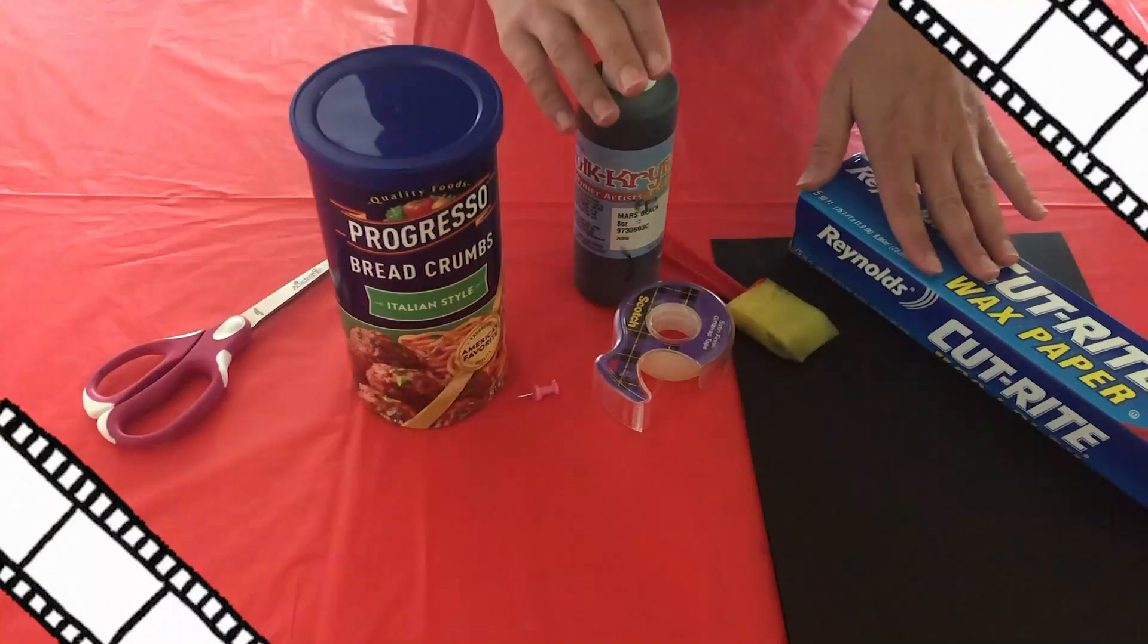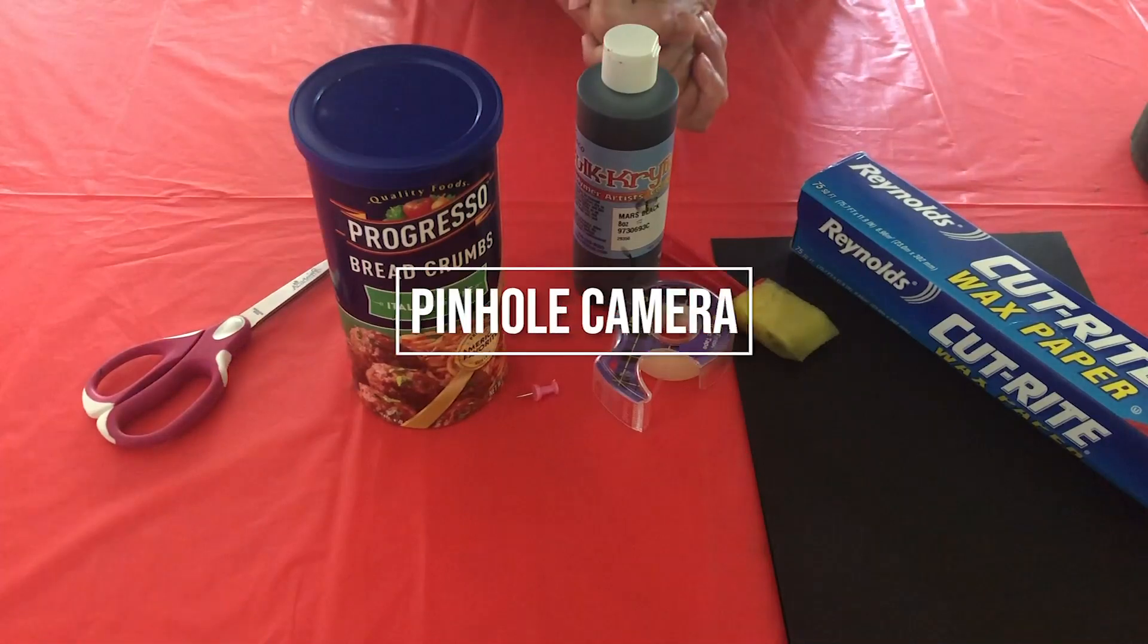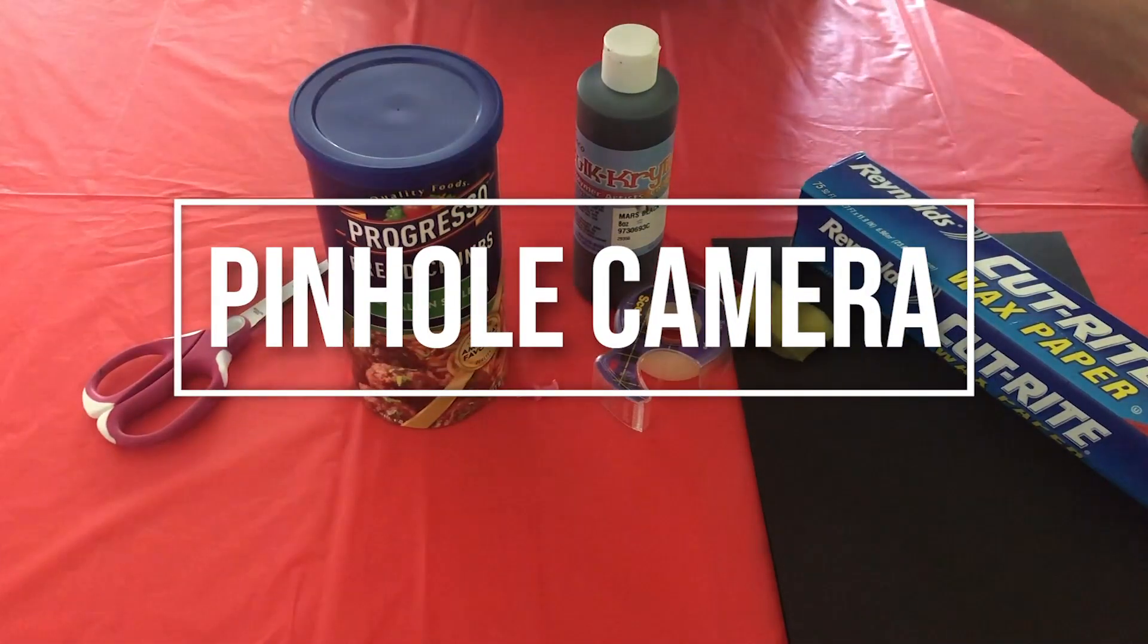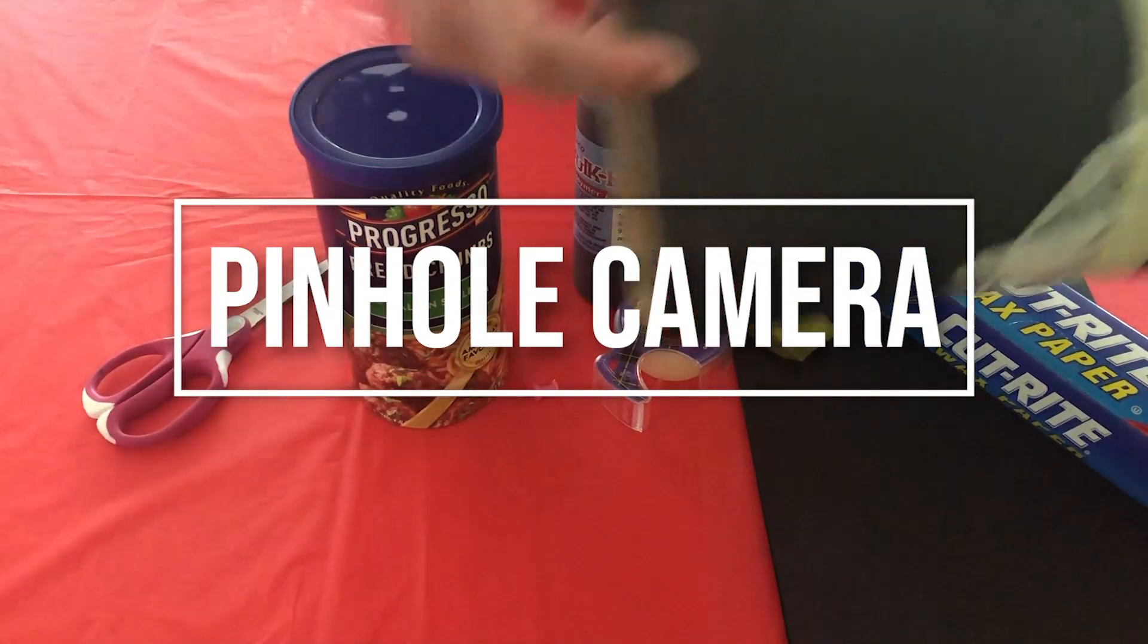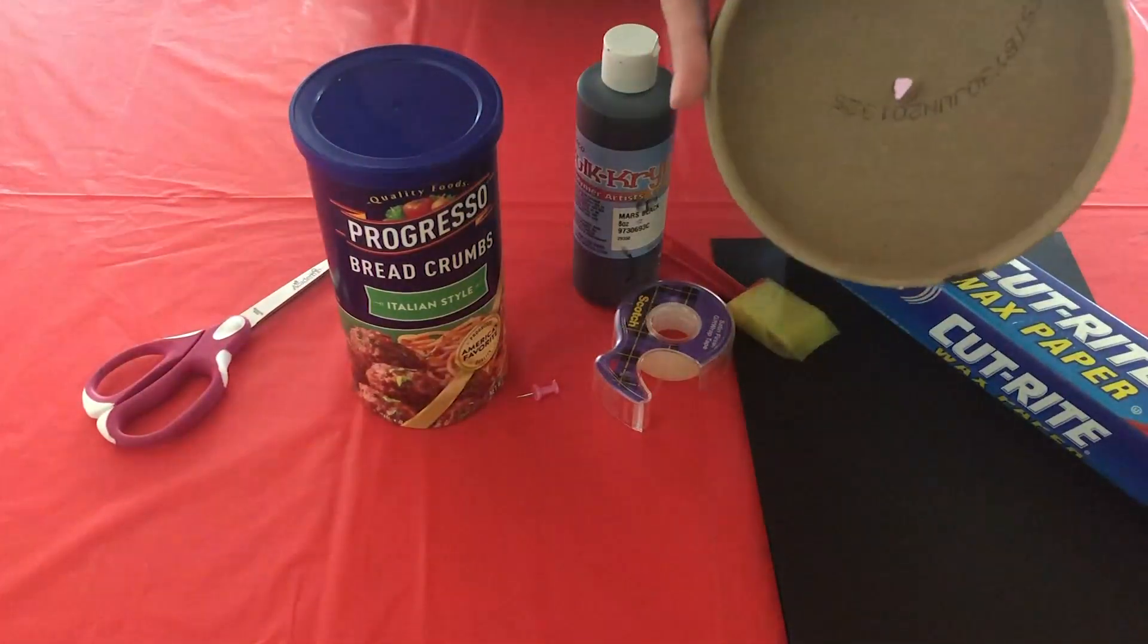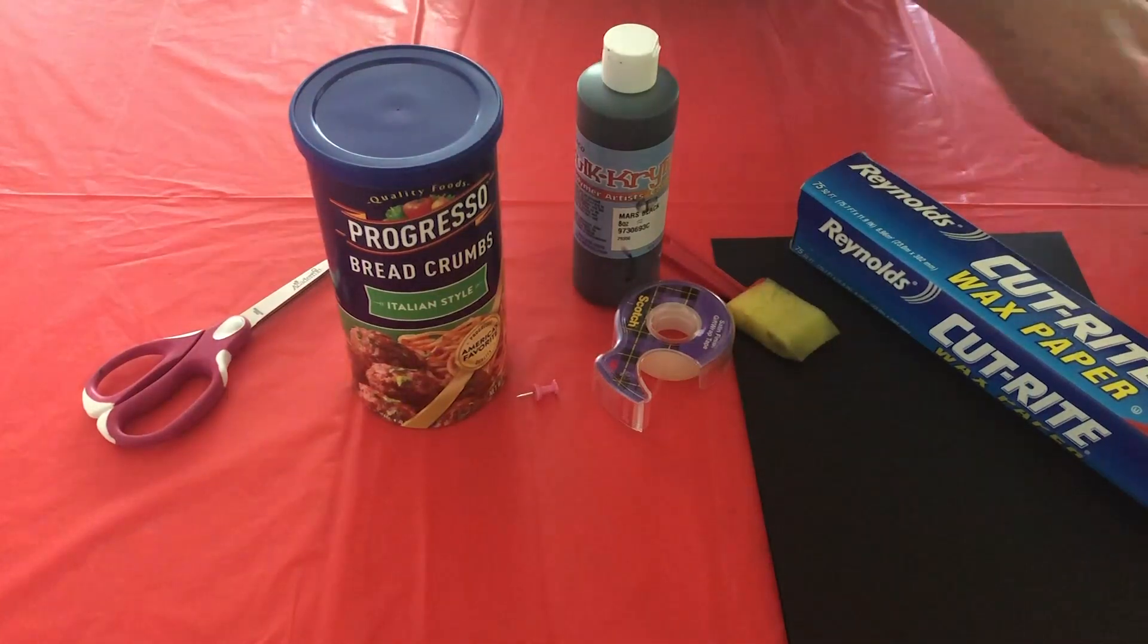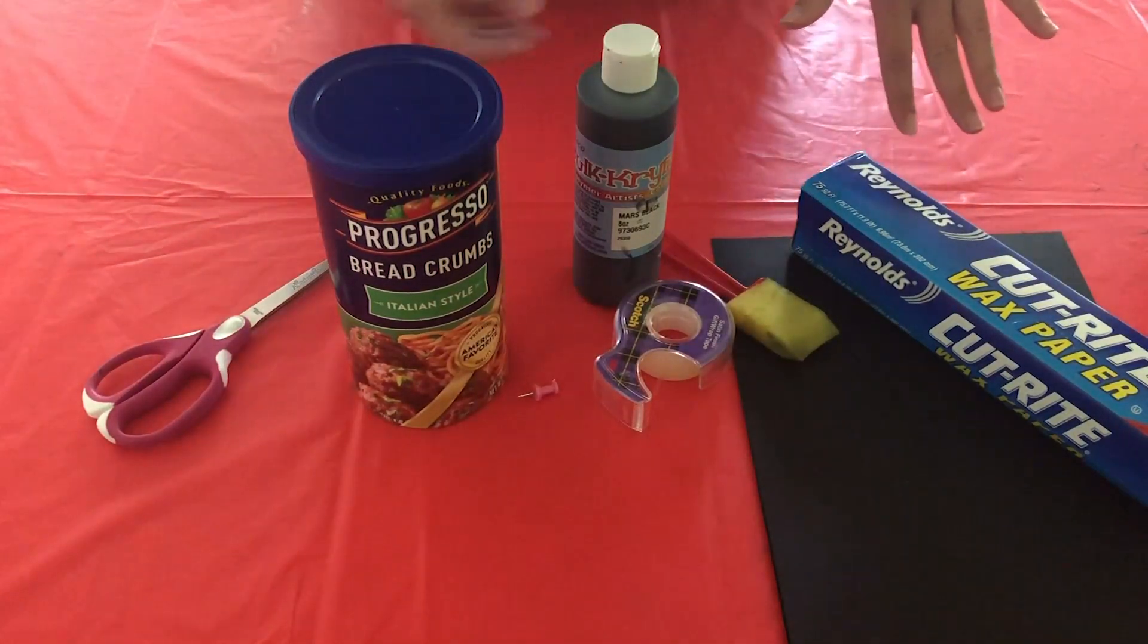Okay, so since May is National Photography Month, for this craft we are going to go back to the basics and create a pinhole camera. Now I made one a few years ago, it's looking a bit rough now, but we're gonna make the same thing. I used for this one a Quaker oatmeal container, today I'm gonna use one of my empty breadcrumb containers.